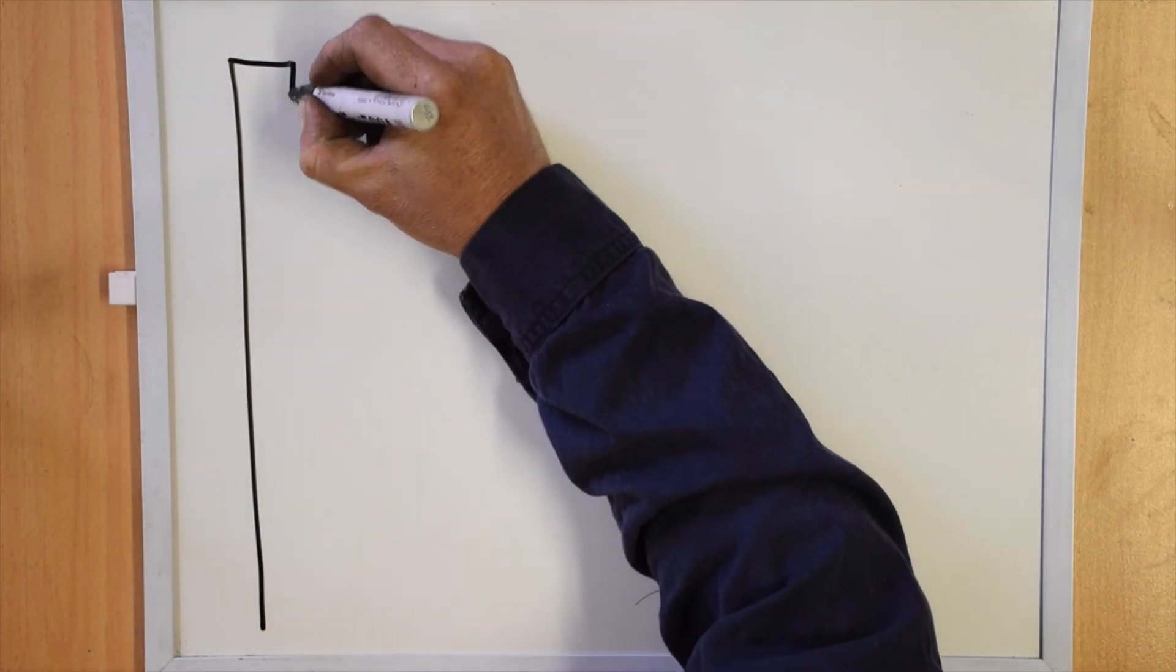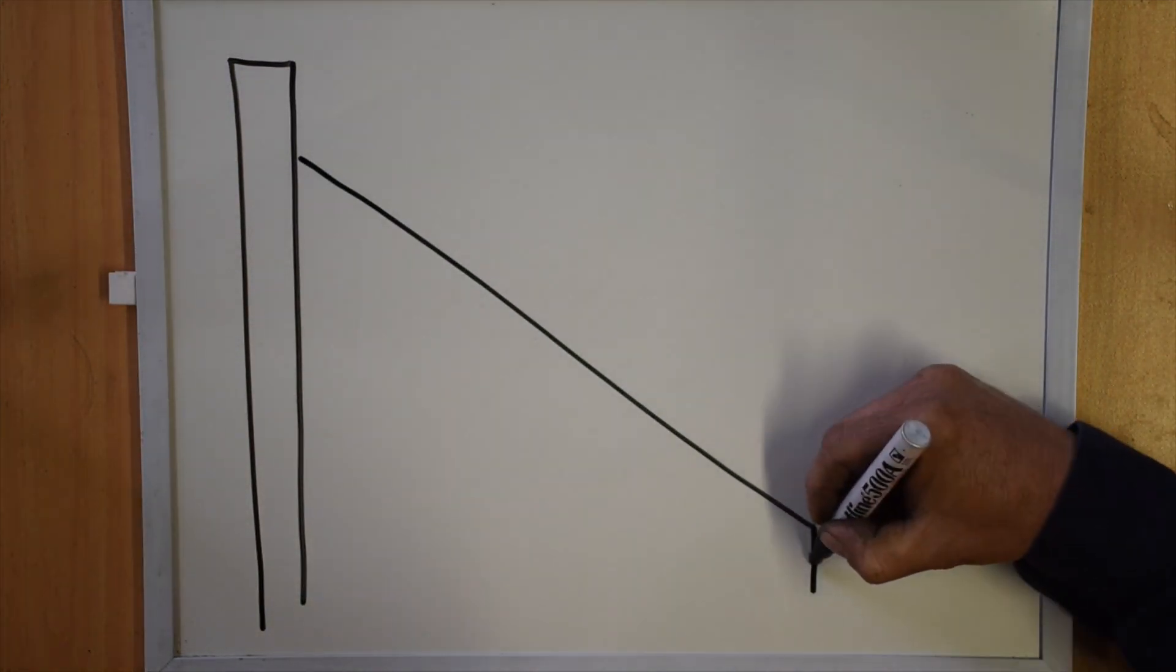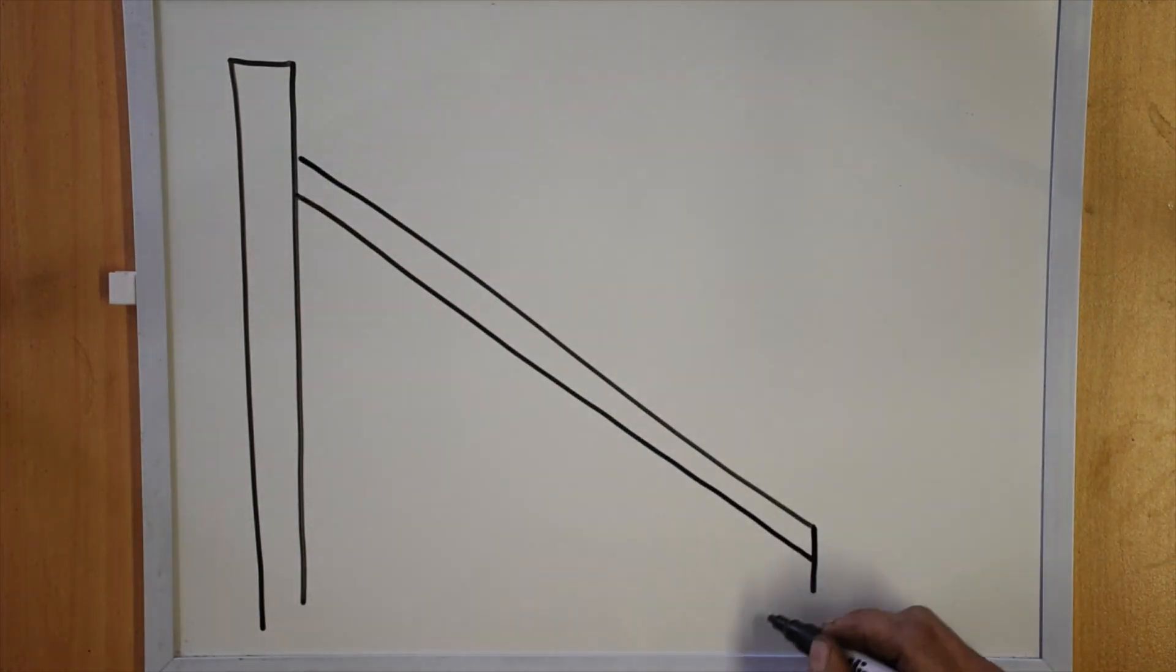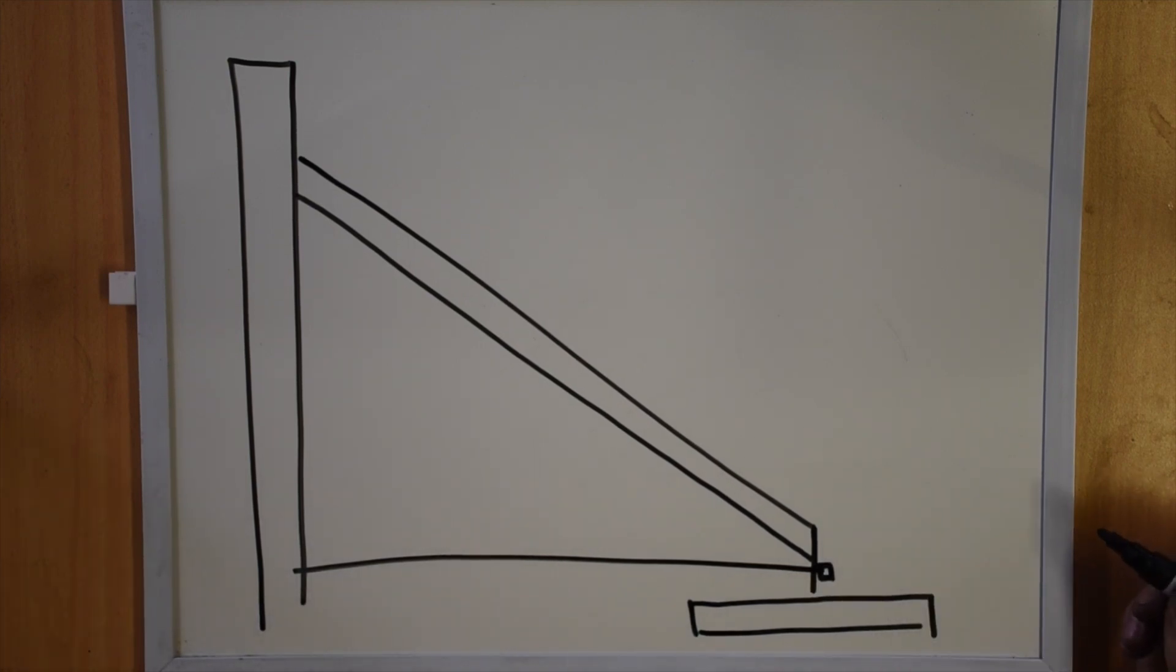This is the process. We started off with a standard timber stay, the footing. Found that moved, then we moved on to tie-back stays. The first ones were a wire tie-back, quickly moved on to a threaded rod.